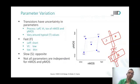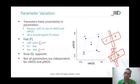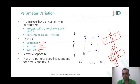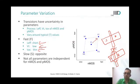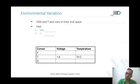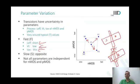While L_effective and Tox are correlated for both NMOS and PMOS, dopant implant is independent. So it can happen that you get a fast-fast lot where both NMOS and PMOS moved towards fast, but you can also get SS and FS lots where NMOS moved to one side and PMOS moved to the other.